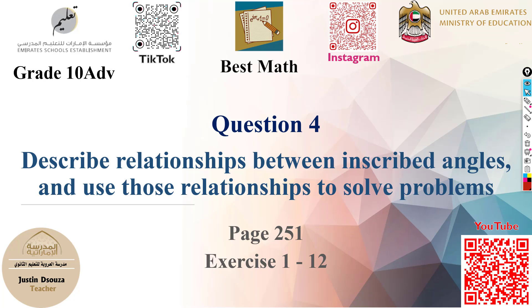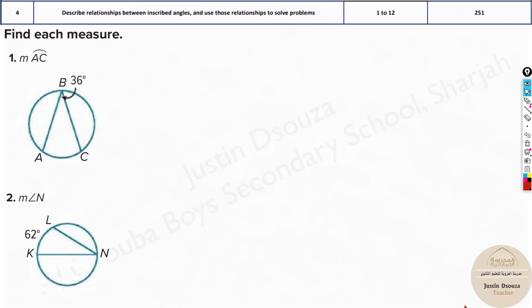Question 4 is about relationships between inscribed angles. Here we have a set of different problems. The first type begins with a simple one.